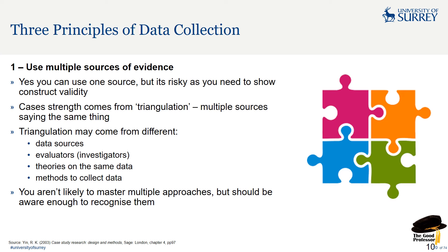Yin proposes three principles of data collection. The first is to use multiple sources of evidence. You can use one source, but it's risky — case strength really comes from triangulation, where multiple sources all point toward or say the same thing. Triangulation may come from different data sources, different evaluators, other investigators finding the same thing, or theories all pointing the same way. You aren't likely to master multiple approaches, but you should be aware enough to recognize them.